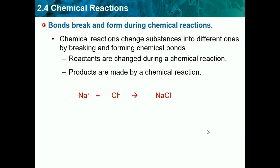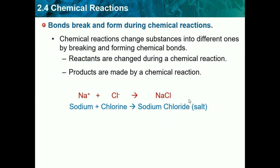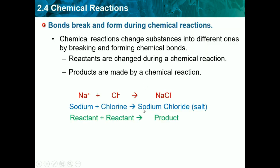So the reactants of this are Na and Cl, and they form in the chemical reaction — shown by this arrow — into NaCl, which is the product. Reactant yields product. The arrow means yields, so it's not equals.